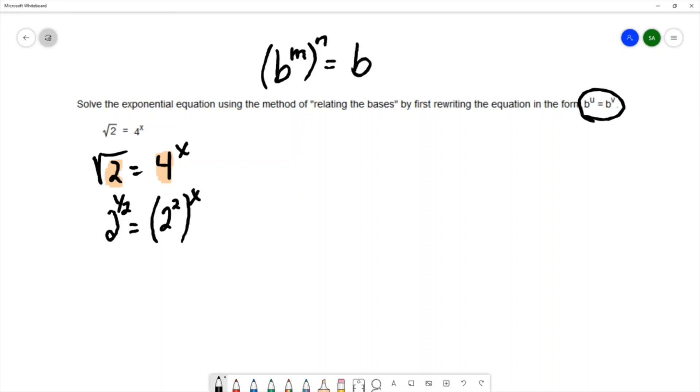So that would give m times n. So on ours we have 2 squared and then all of that raised to the x power. That would be 2 to the 2x. On the other side I have 2 to the one half power.